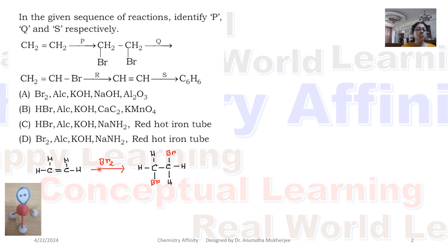So when CH2 double bond CH2 is treated with bromine, we are getting vicinal dihalide. Vicinal dihalide in presence of alcoholic KOH, it undergoes elimination reaction like HBr removed. We are getting alkene compound, so it is CH2 double bond CHBr.